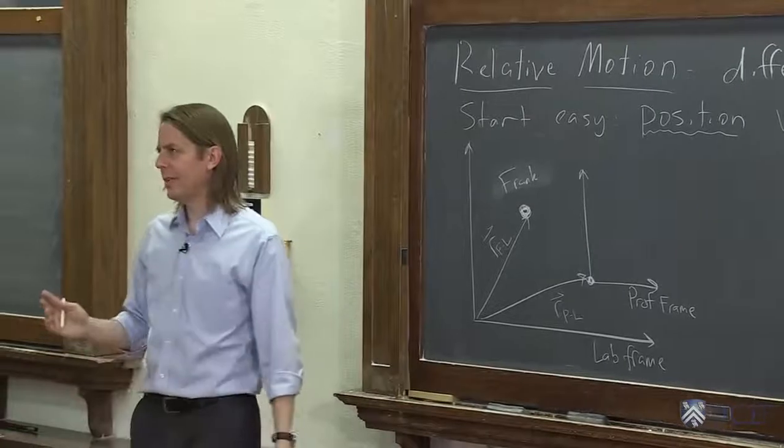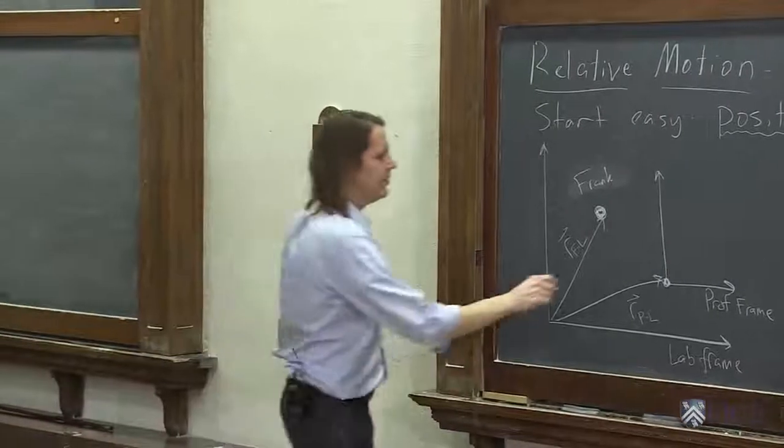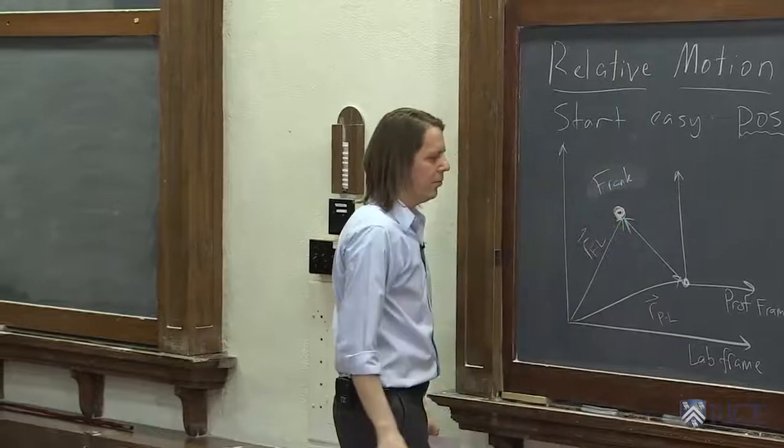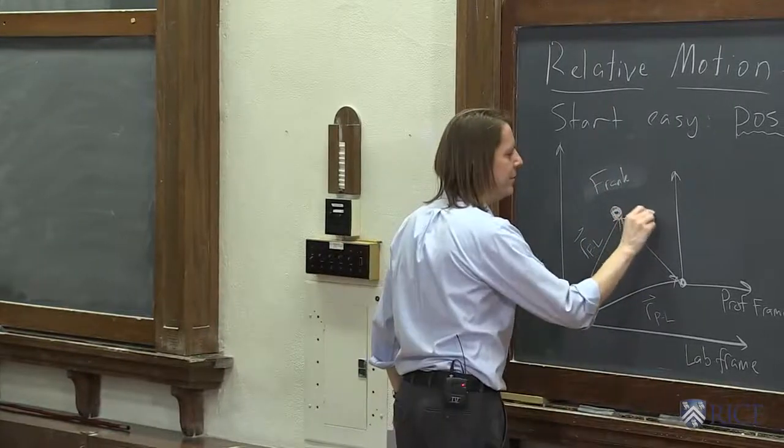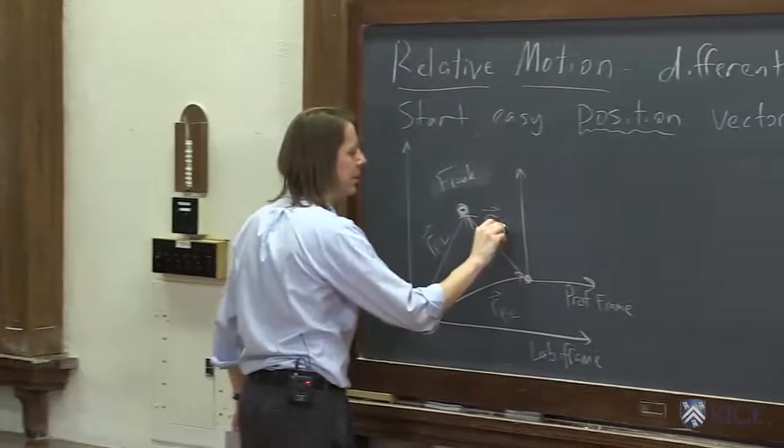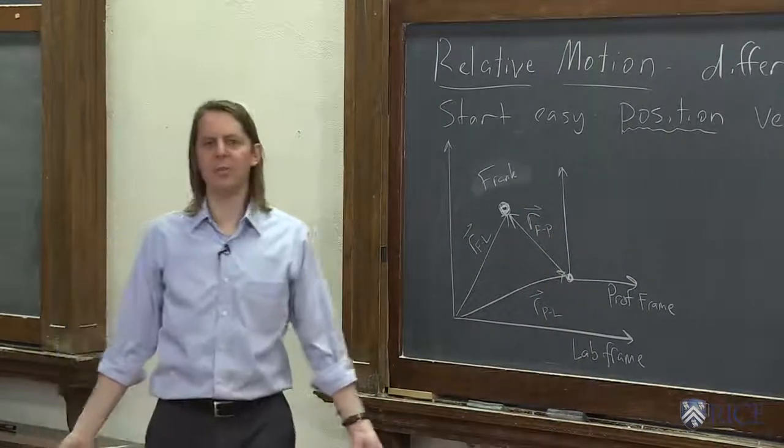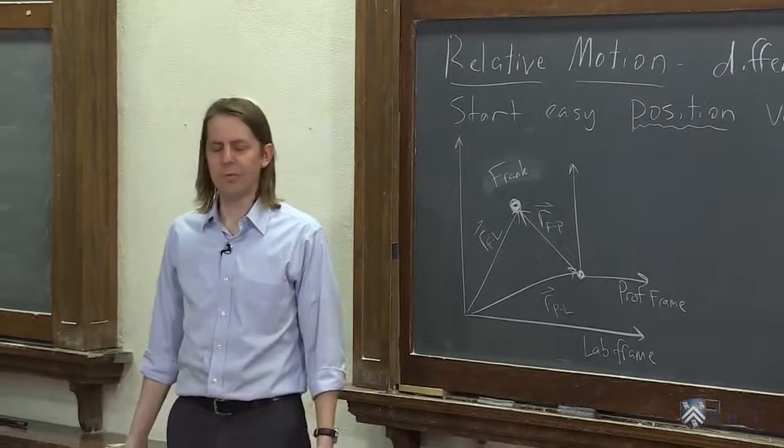We could also think a little bit about Frank in my frame. Let's draw that vector. Well, my frame is here. It's kind of to the left and up. So it's kind of over here and up. It's this vector right here. Over and up. That is the position of Frank in P in my frame.